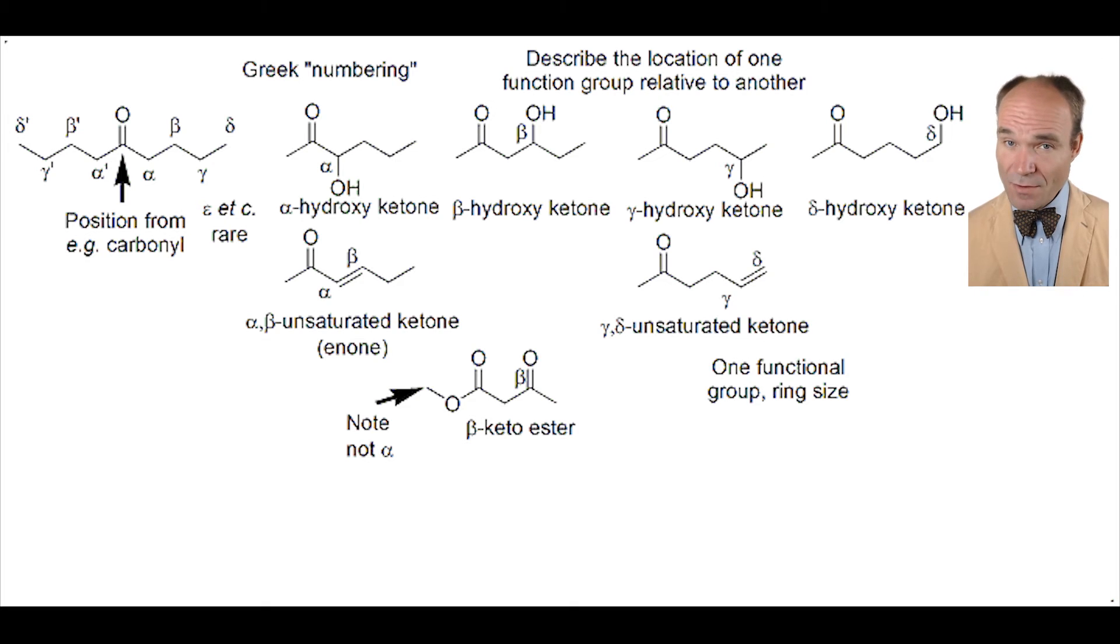Now, with rings, we wish to determine the carbon furthest from the carbon of the functional group. In this example, with a cyclic ester known as a lactone, it's the gamma carbon that's furthest from the carbonyl carbon. So the system is described as a gamma lactone.